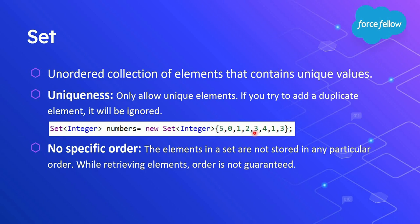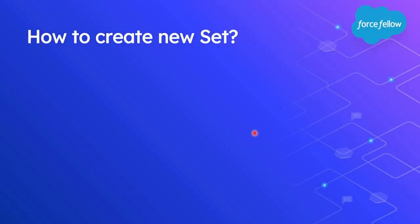While retrieving these elements, order is not guaranteed, and as with lists, we can't access items using an index. In a nutshell, if we want to store multiple unique values in a single container and element order doesn't matter, then a set is the only option in Apex.